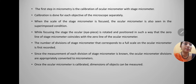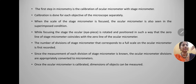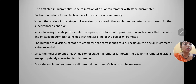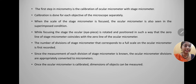When the scale of the stage micrometer is focused, the ocular micrometer is also seen in superimposed condition. We can see two different markings in the field of vision. These are superimposed so that the first line of the stage micrometer and the first etching on the ocular micrometer coincide. Once coinciding, the system is calibrated. The number of divisions of the stage micrometer that corresponds to a full scale on the ocular micrometer is recorded — that is, where the two next coincide exactly — and that gradation on both scales is recorded.